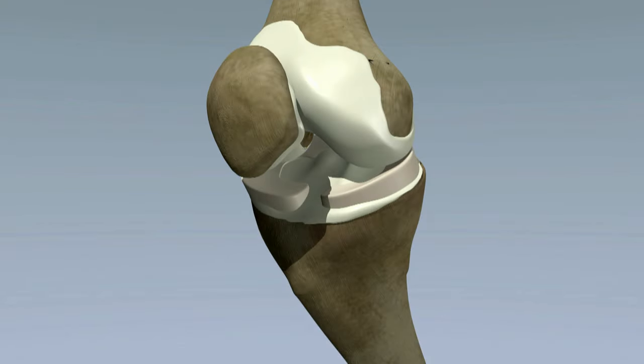Meniscus tears are sometimes repairable. The outer rim of the meniscus has a better blood supply. This is known as the red zone.